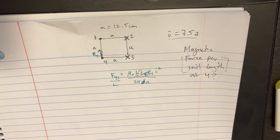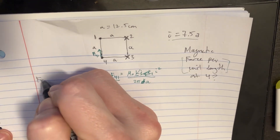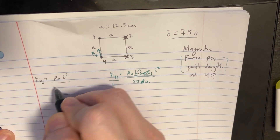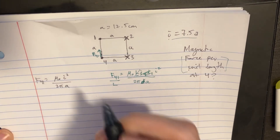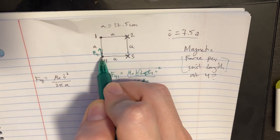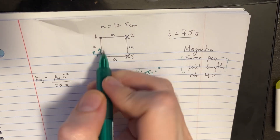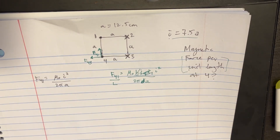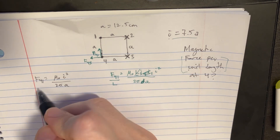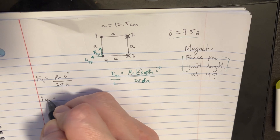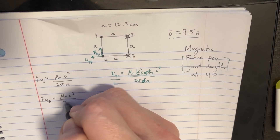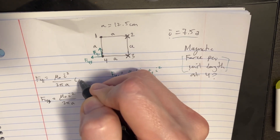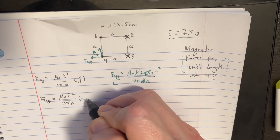So the first force F4,1 equals mu naught times I squared divided by 2 pi A. Now for the next one, those currents are in opposite directions, so they're going to repel each other. We call this F4,3, and it's the same magnitude: mu naught I squared over 2 pi A. However, F4,1 is in the positive J direction and F4,3 is in the negative I direction.